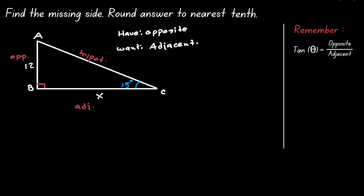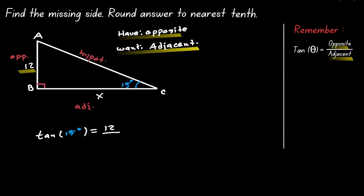Now let's plug in this information. Tangent evaluated at 15 degrees is equal to the opposite — which is what we have, which is 12 — divided by the adjacent, which is what we want; let's call it x. Instead of writing tangent of 15, let's write it as tangent of 15 over 1, so we can see that the next step is cross multiplication.